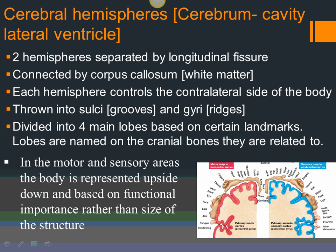Each hemisphere controls the contralateral — meaning the opposite — side of the body. Sensory impulses from the right side travel to the left cerebral hemisphere. Motor impulses come down from the central nervous system to the opposite side. If there's damage to one cerebral hemisphere, you will see the opposite side of the body affected — that's what is meant by contralateral.